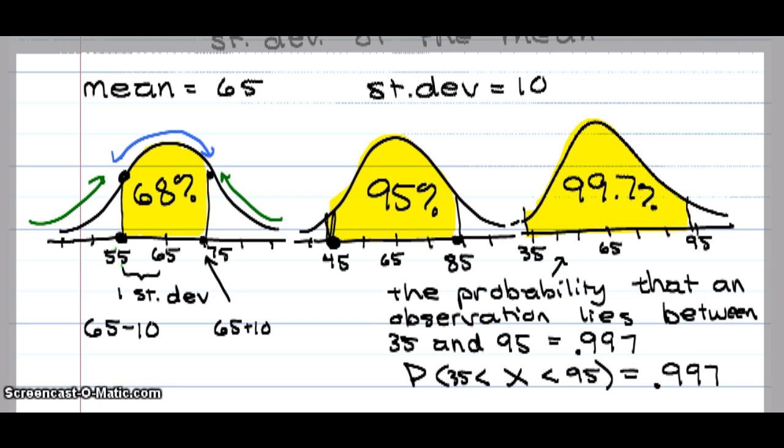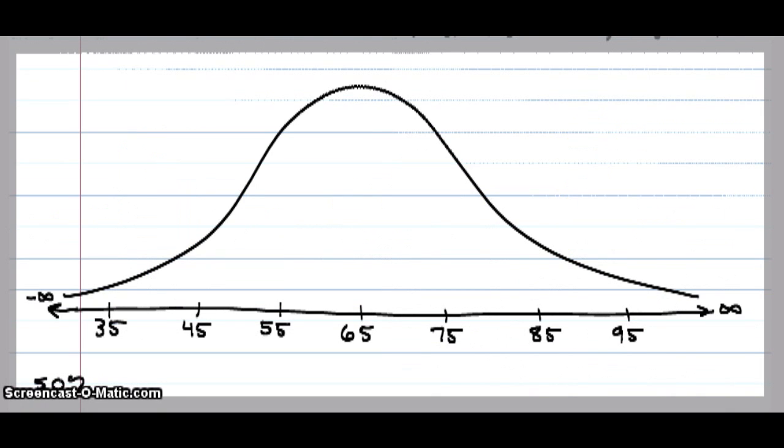But this empirical rule gives us a lot more information than that. Let's blow this up a little bit. If I drew a line vertically through the mean up to the top of the curve, this curve is symmetrical. The empirical rule only works on symmetrical bell curves.